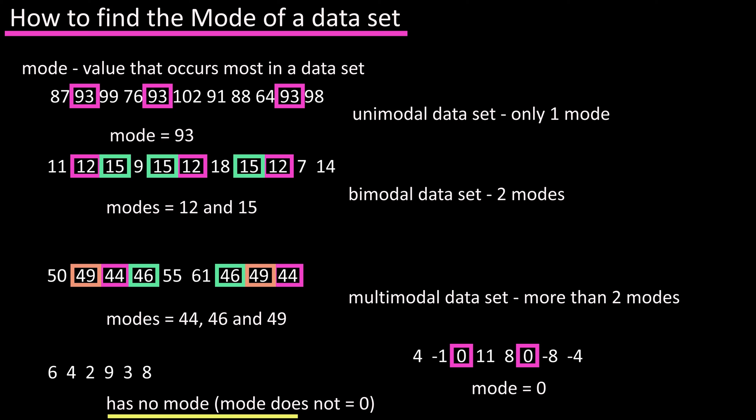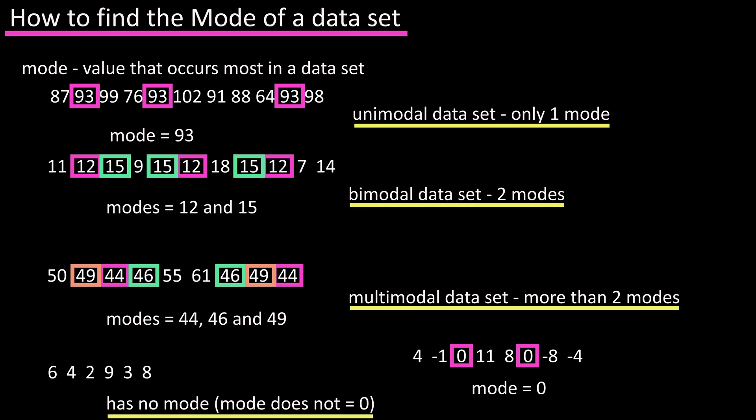So, data sets can have no mode, be unimodal, be bimodal, or be multimodal.